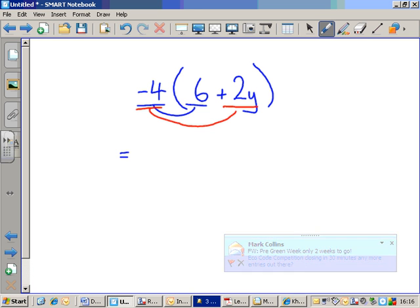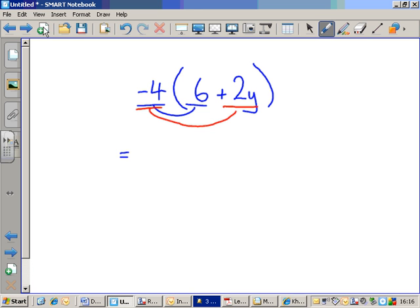So, minus four times six. Minus times a plus is a negative outcome, and four sixes are twenty-four, so minus four times six is minus twenty-four. And minus four times plus two Y, negative times a positive is a negative answer. Four twos are eight, so it's minus eight Y.